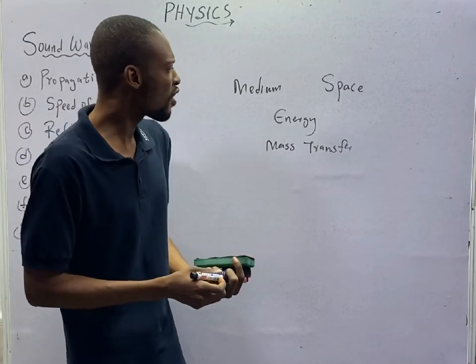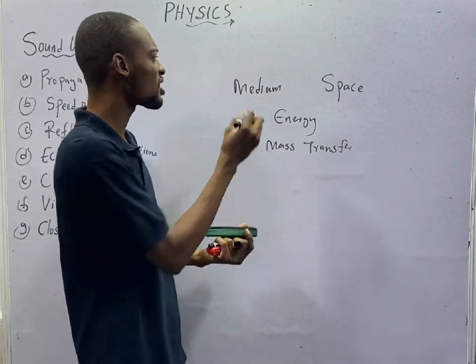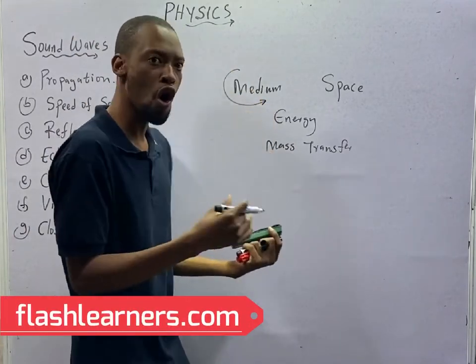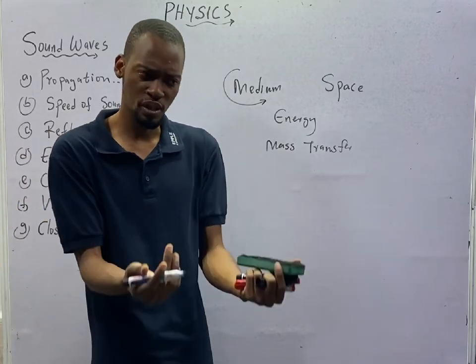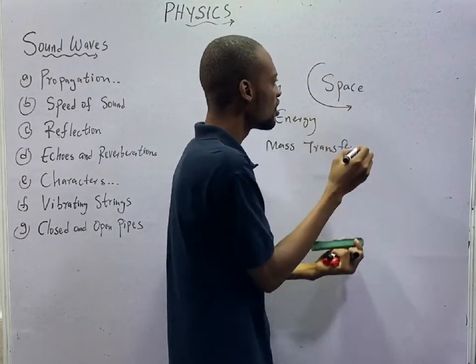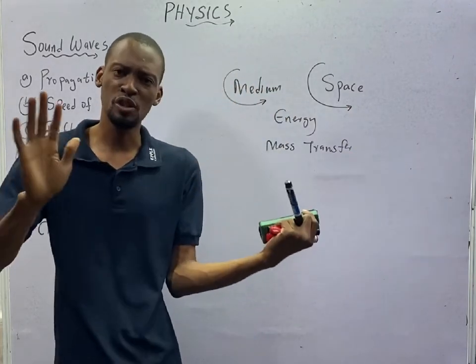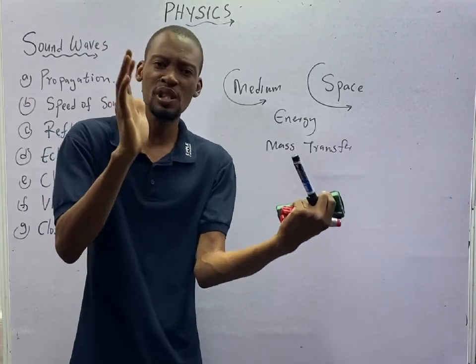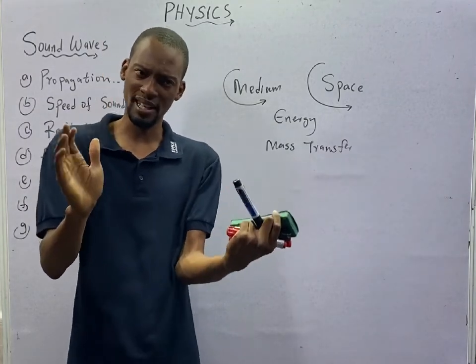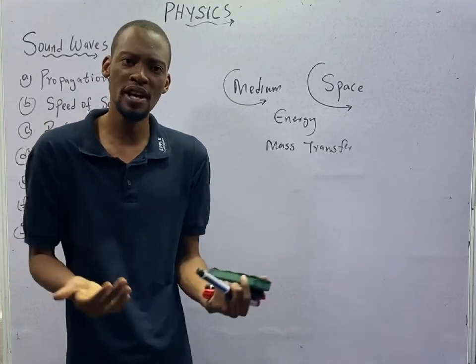From this definition, it shows that waves can travel through medium or can choose to travel without a medium. An example of wave that does not travel through a medium, it does not require material medium, which means even in empty space it can propagate, they are generally referred to as electromagnetic waves.